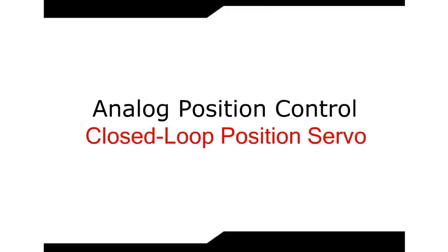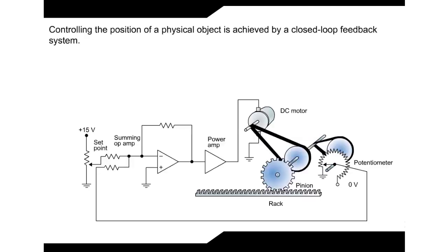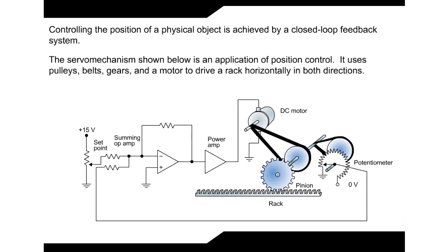Welcome to Analog Position Control Closed Loop Position Servo. Controlling the position of a physical object is achieved by a closed loop feedback system. The servo mechanism shown below is an application of position control. It uses pulleys, belts, gears, and a motor to drive a rack horizontally in both directions.